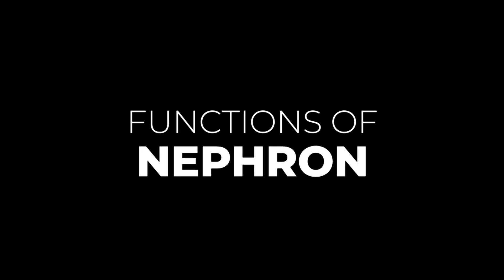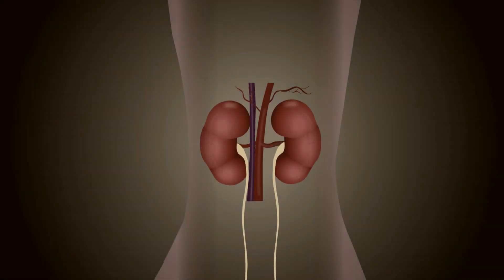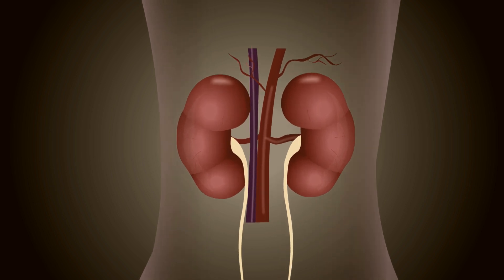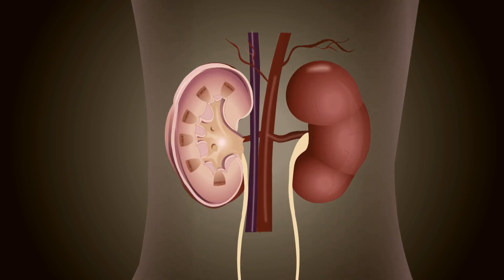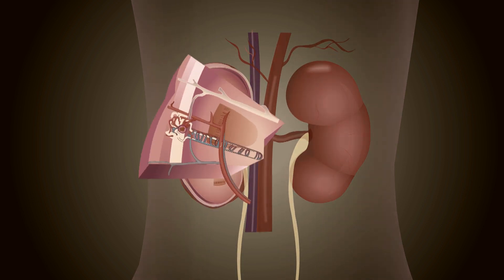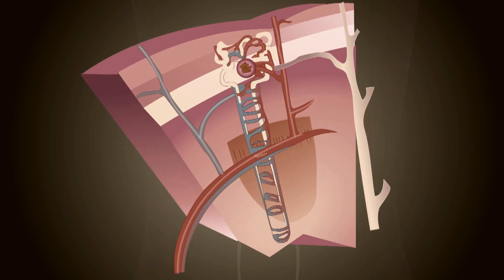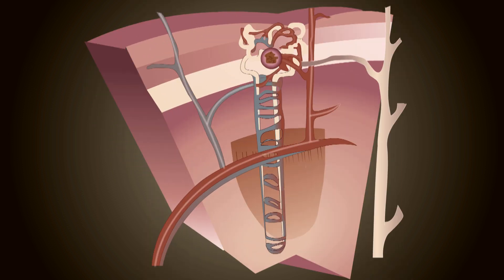What are the functions of nephron? Nephron is the structural and functional unit of the kidney. There are about a million nephrons in general.